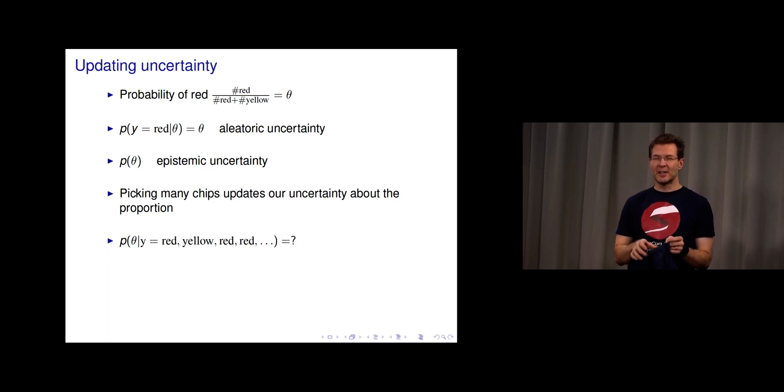That means that even if I don't tell you how many reds and yellows there are, by repeatedly showing one, putting it back, randomly picking another one, you are learning something about the ratio of red and yellow ones. We can then write the probability of theta given Y, the sequence of observations.